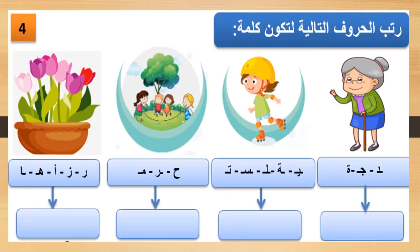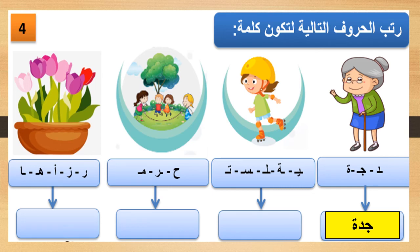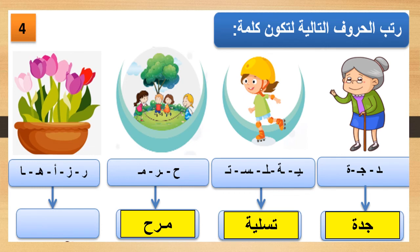رتب الحروف التالية لتكون كلمة - arrange the following letters to form a word. Look at the first picture: جدة. Second: تسلية. Third: مرح. Fourth: أزهار.